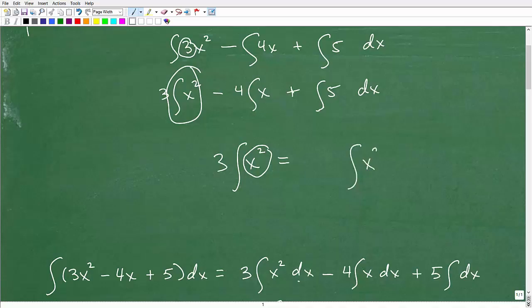Isolated. Integral of x² is equal to this variable x. What we do, we take this power, we add 1 to it. So that's going to be 2 plus 1. We leave that in the exponent.